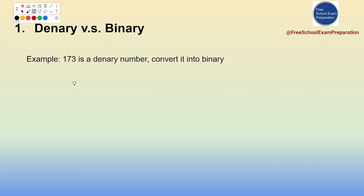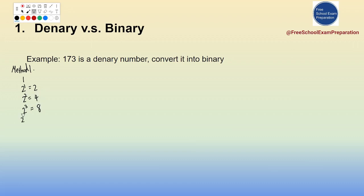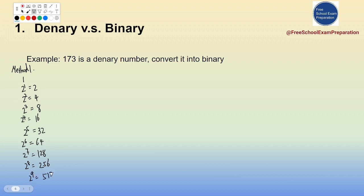Now, how do we convert a denary number to binary? There are two methods. For Method 1, you list all the powers of 2: 1, 2, 4, 8, 16, 32, 64, 128, 256, 512, and so on. Our target denary number is 173, and we find where 173 falls in this list — it's between 128 and 256, so we choose the smaller value, 128.